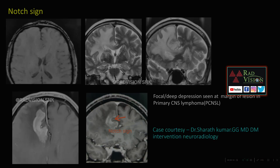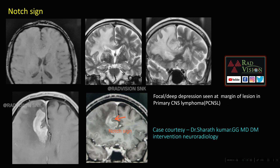The notch sign is a focal deep depression seen at the margin of the lesion. This focal deep depression at the margin is seen in primary CNS lymphoma.